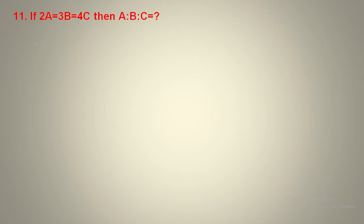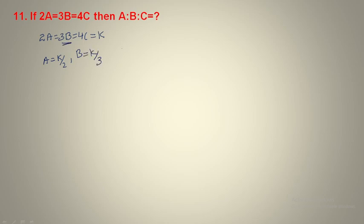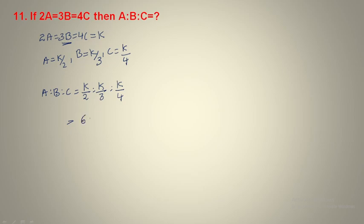Question number 11: 2a = 3b = 4c. Consider this equals k. So 2a = k means a = k/2. 3b = k means b = k/3. 4c = k means c = k/4. To find a:b:c, we have k/2 : k/3 : k/4. Cancel k and find the LCM of 2, 3, and 4, which is 12. In reverse shape, a:b:c = 6:4:3.